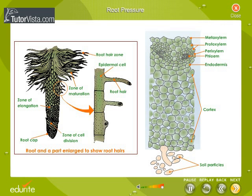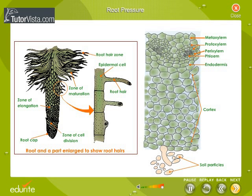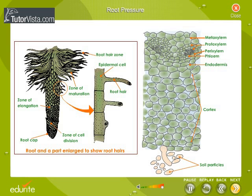Let us see what root pressure actually means and how it is developed. The water and mineral salts absorbed from the soil by the root hairs gradually accumulate in the cortex. As a result, the cortical cells become fully turgid, and under this condition their elastic walls, being much stretched, exert pressure on the fluid contents and force out a small quantity towards the xylem vessel.